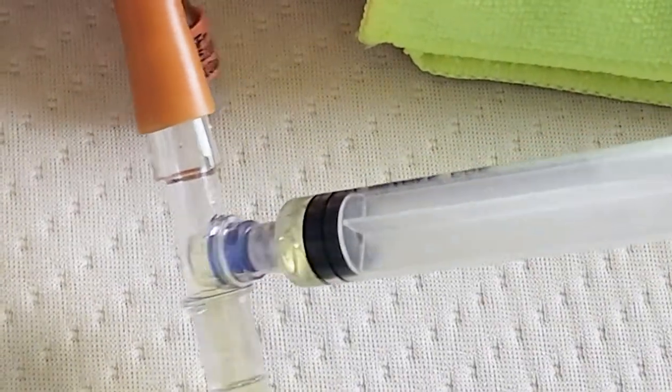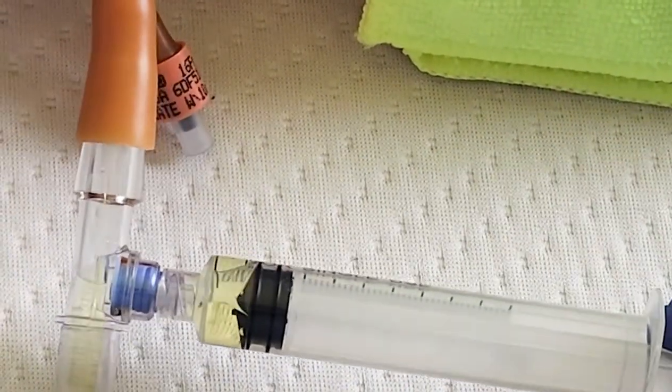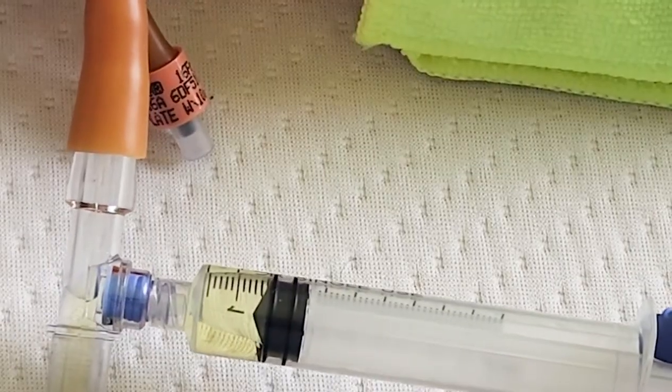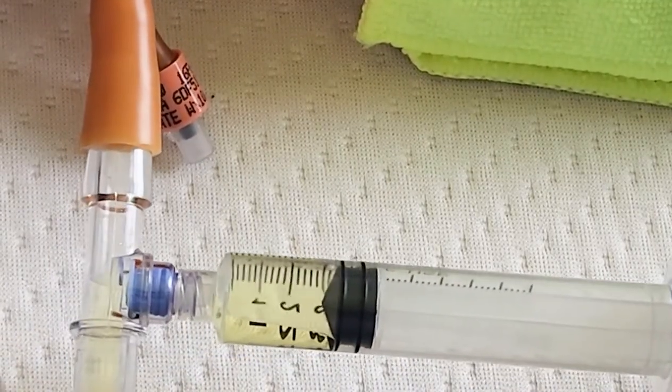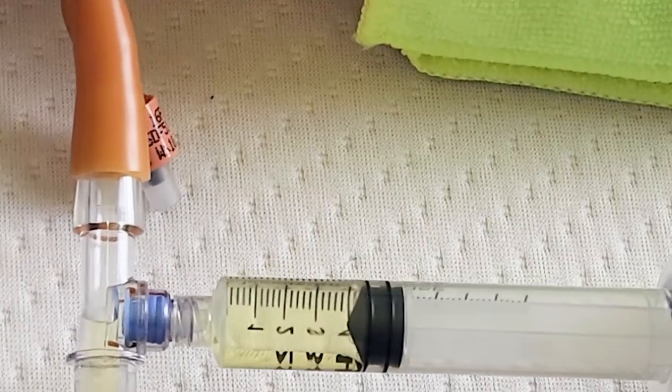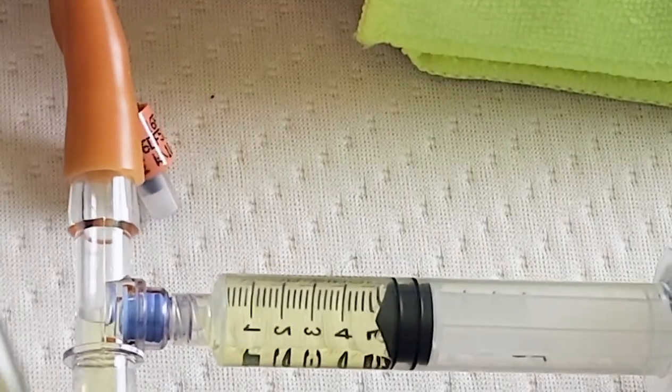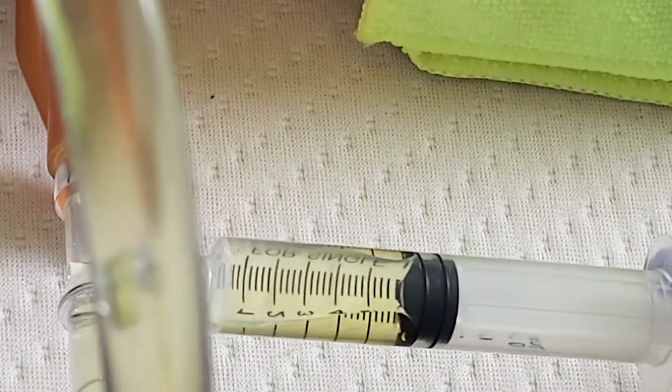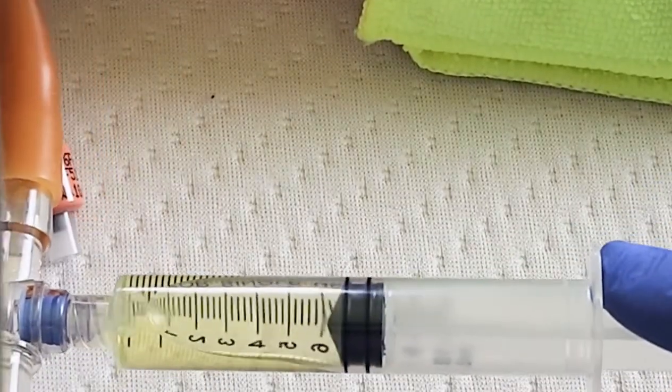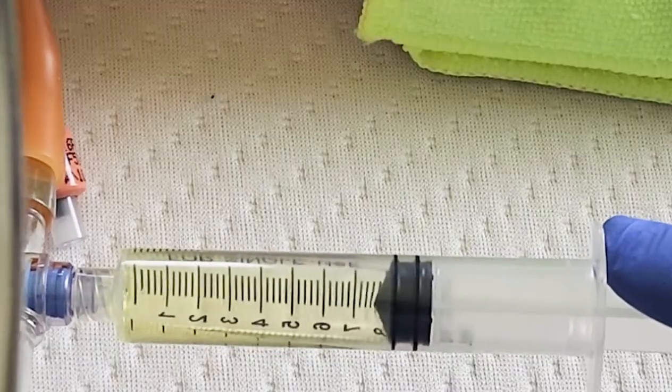Then you're going to draw back your specimen nice and slow. You don't want to go too fast because you want to make sure that you're nice and gentle. Sometimes you might have to tip up your tubing just a little bit to get the full 10cc syringe.